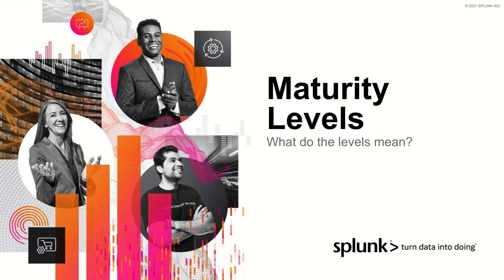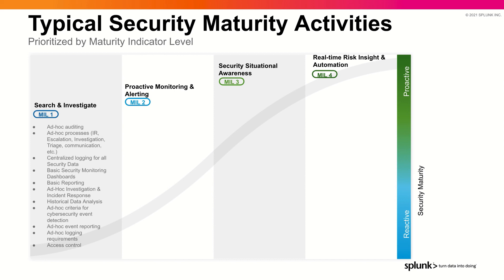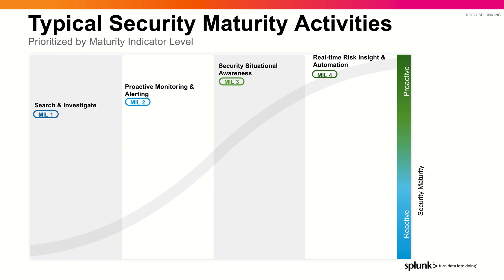So now let's talk about the maturity levels. The first maturity level — Maturity Indicator Level 1, or MIL1 as we call it — and what characteristics really make up that maturity indicator level one. Typical security programs mature just like this, from a very reactive program on the bottom left to a proactive state. Think about where you kind of land, but what we're really going to focus in on is Maturity Indicator Level 1.